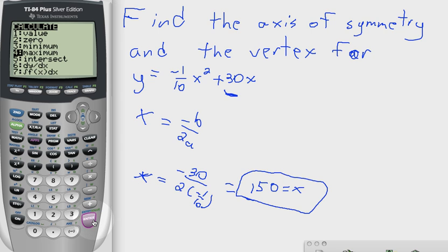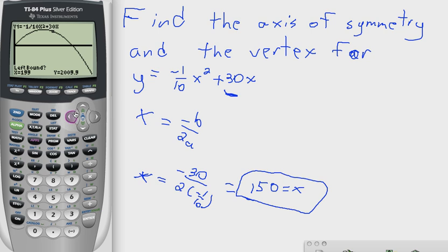So you press enter, and then you come over, and again, same like when we found the x-intercepts, we need to come to the left of that maximum point. Press enter, then you come over until you come to the right.